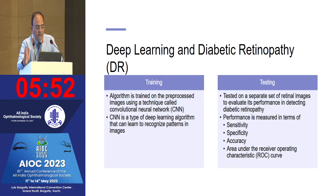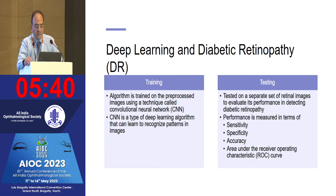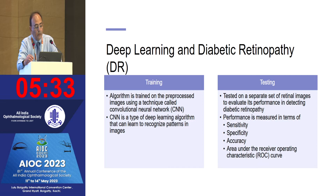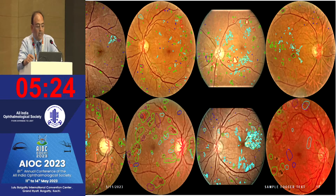This CNN model is then tested on a separate set of retinal images to evaluate its performance in detecting diabetic retinopathy. Performance is measured in terms of sensitivity, specificity, accuracy, and area under the receiver operating characteristic (ROC) curve. You tell the machine what is what, and the machine starts learning on its own from there.